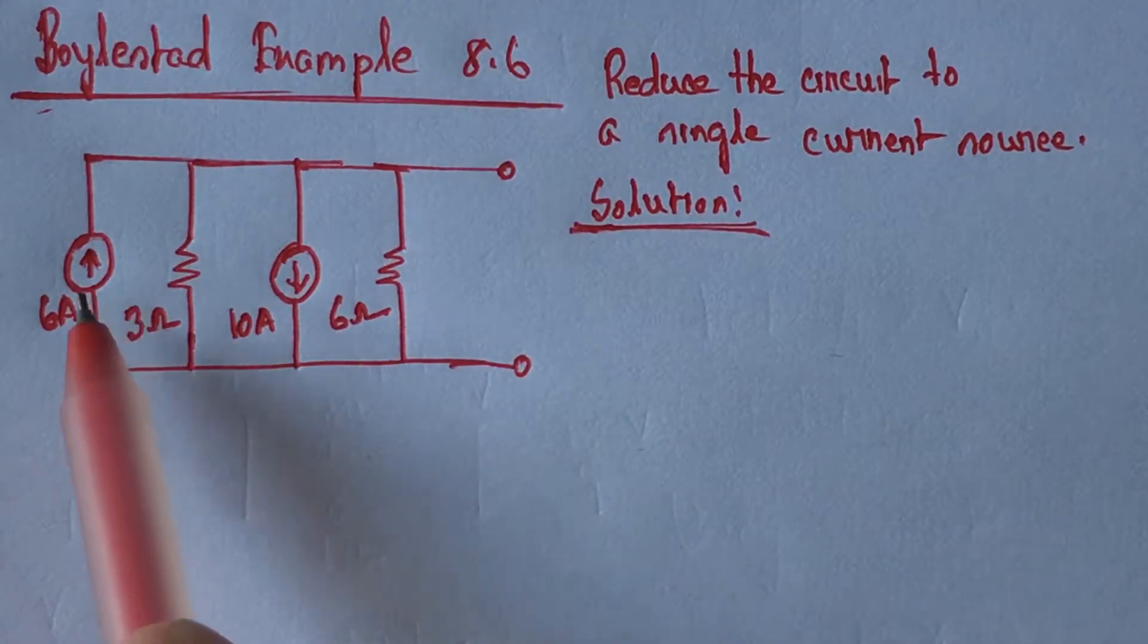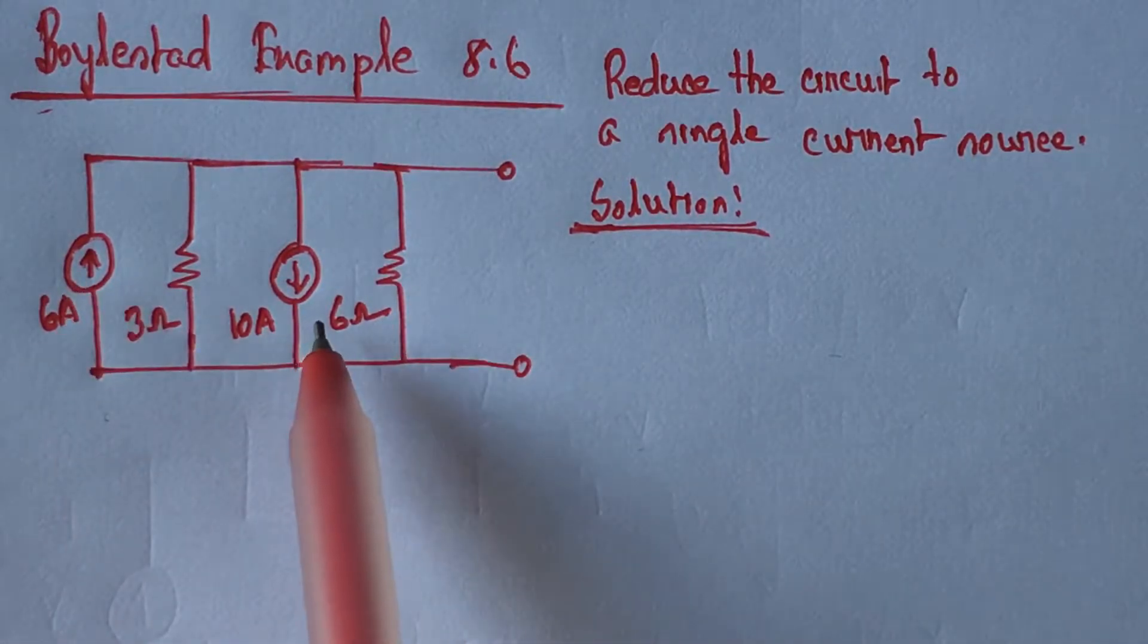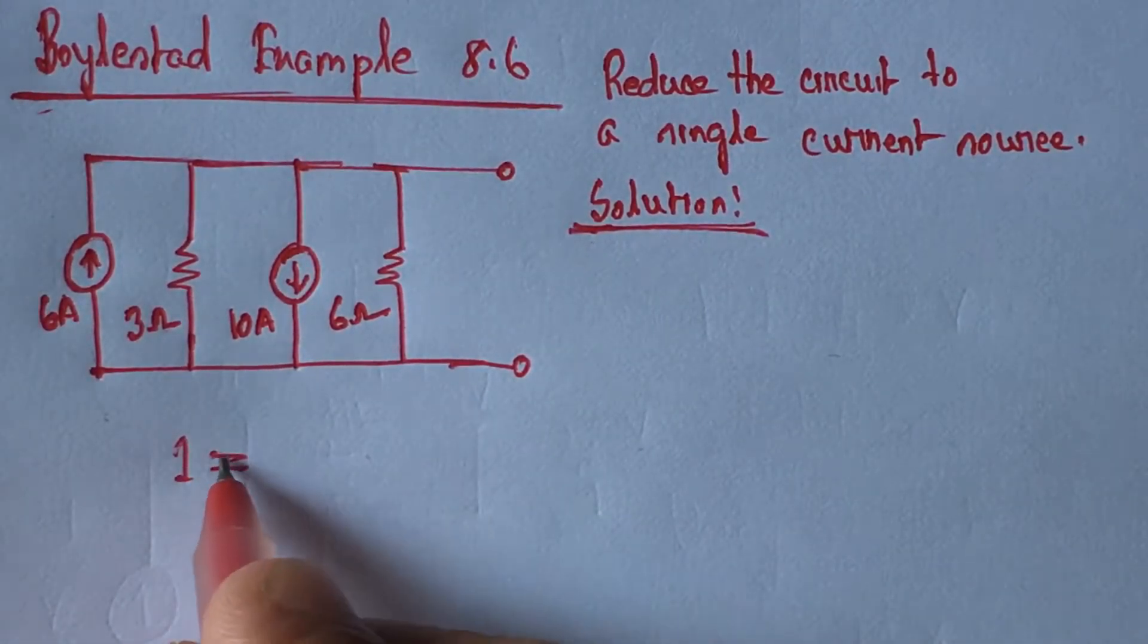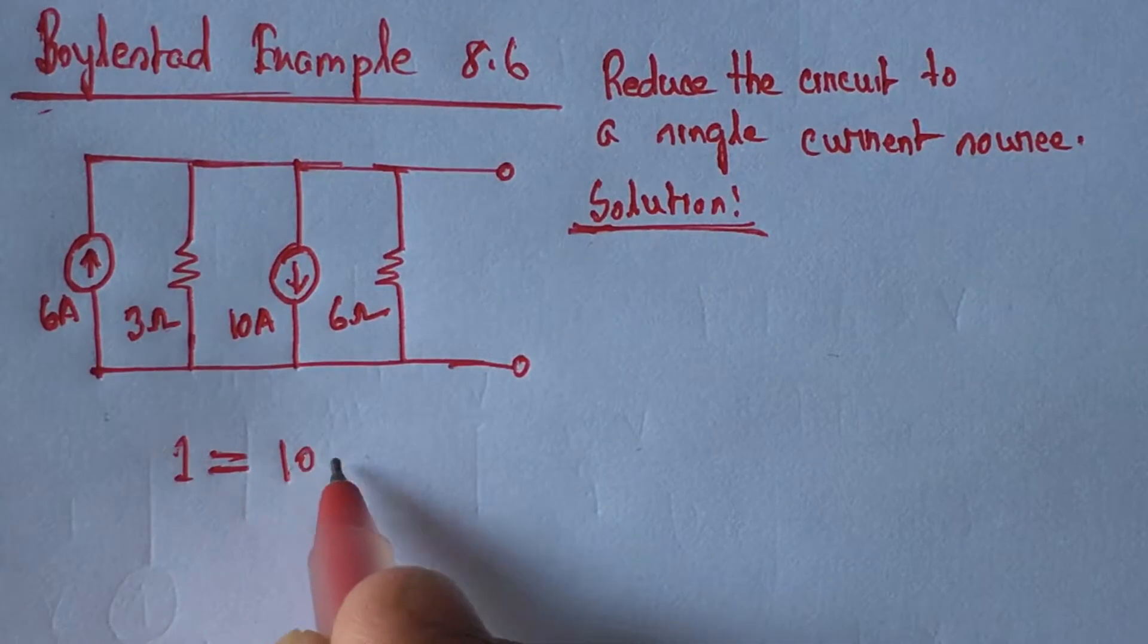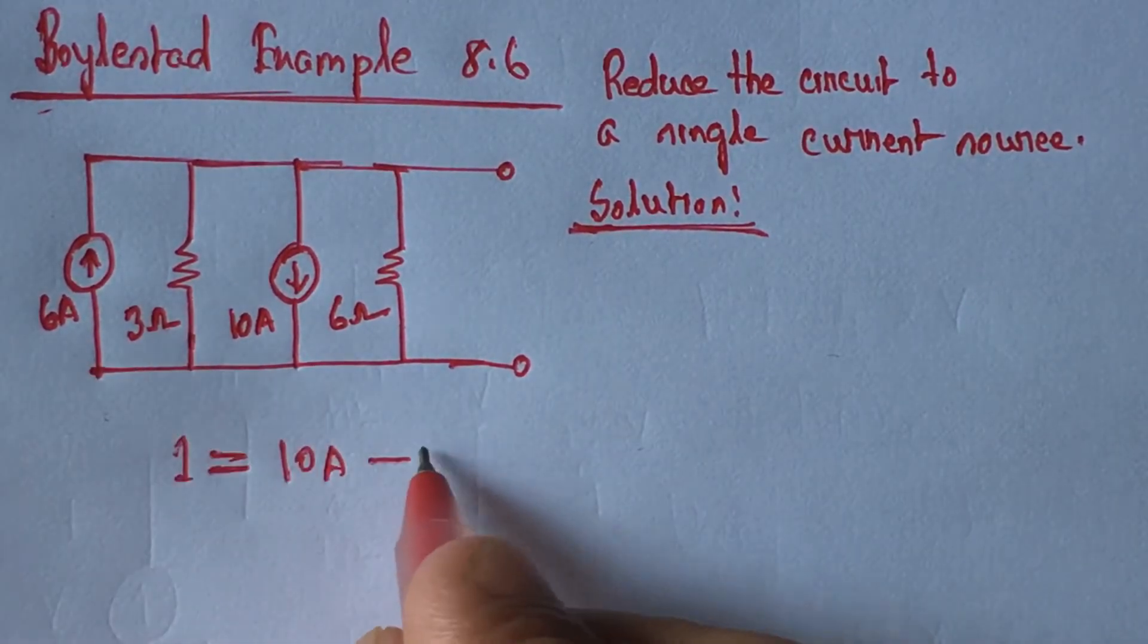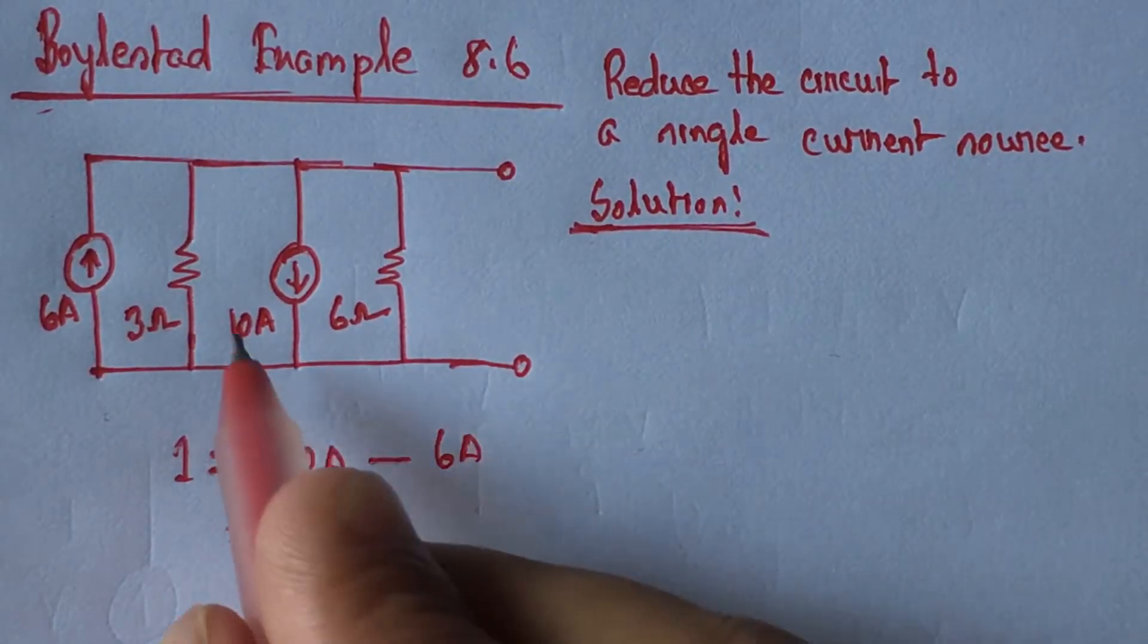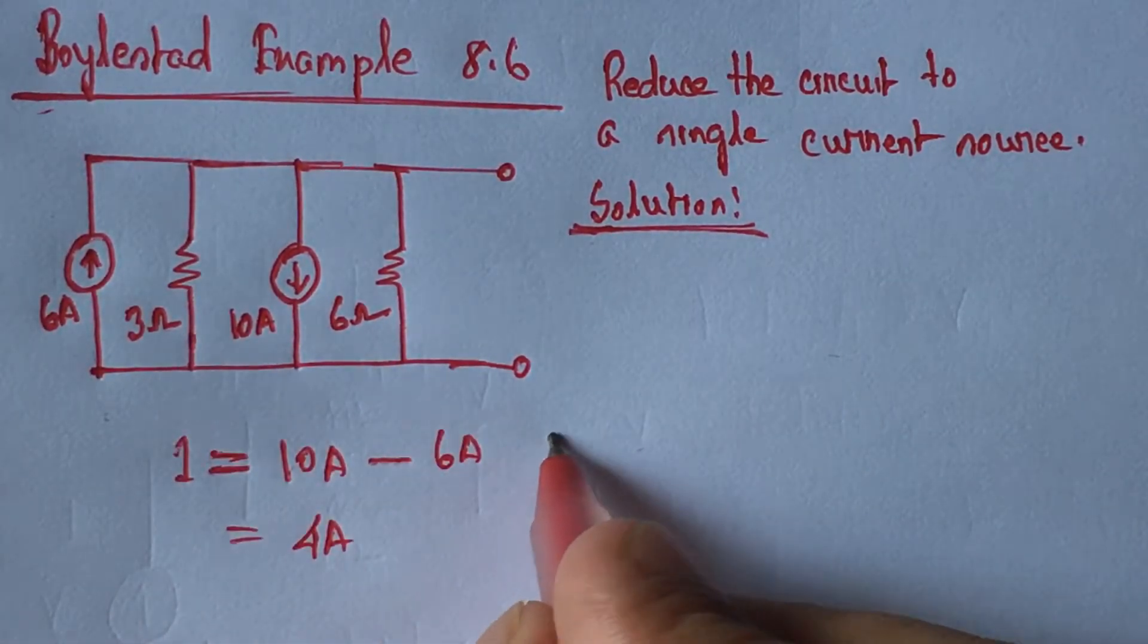From the circuit, since 6 ampere current is flowing upward and 10 ampere current is flowing downward, if we take the equivalent current as I, the value of I will be 10 ampere minus 6 ampere, which equals 4 ampere. The 3 ohm and 6 ohm resistances are in parallel.